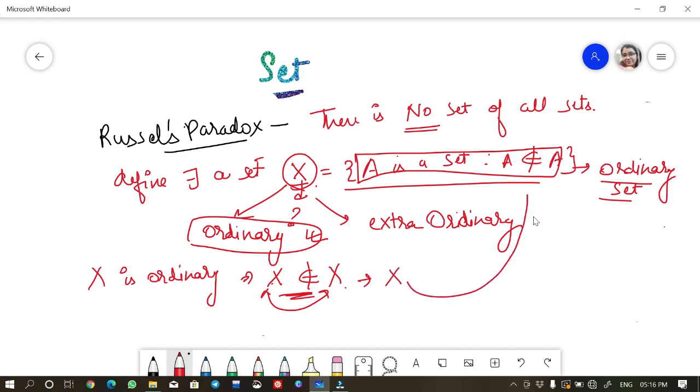This will imply X is equal to X, which is a contradiction. Why? Because we took X to be ordinary set. So we got one paradox. We considered it to be ordinary and we got it to be extraordinary.